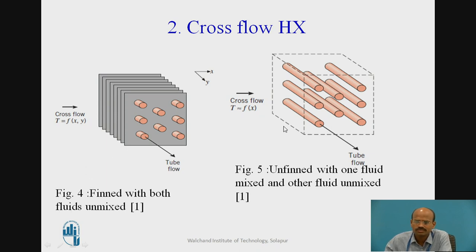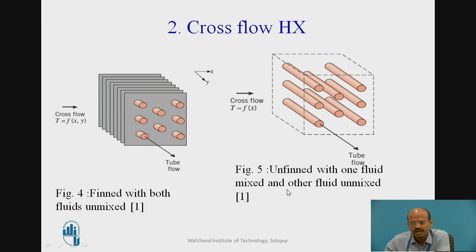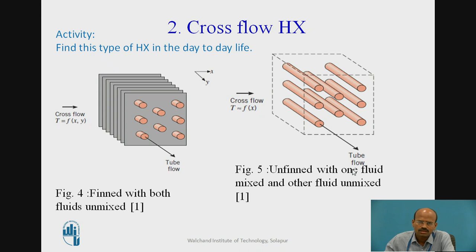In the second cross flow type, we take one plate on which the tubes are placed. Hot fluid flows through these tubes, and the cold fluid flows freely over the tubes. Here the cold fluid may mix with itself, which is why this is known as unfinned with one fluid mixed and the other fluid unmixed. Think about where you might find this type of heat exchanger in day-to-day life.